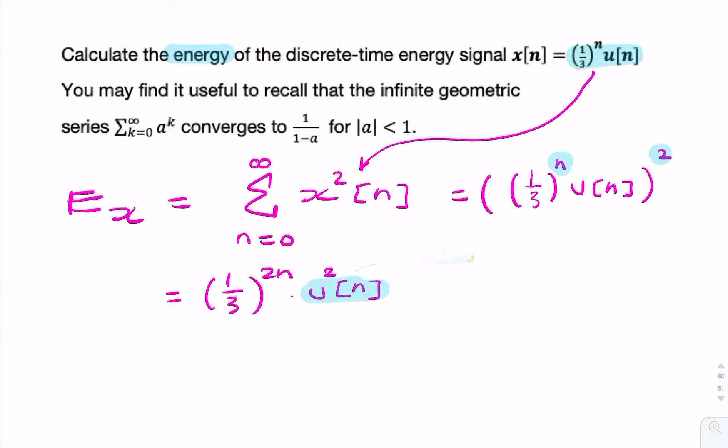Now we have our expression for the energy. We look at what we're given in the question. We're given that the infinite geometric series converges to 1 over 1 minus a. And this geometric series looks very much like that, so they look similar.